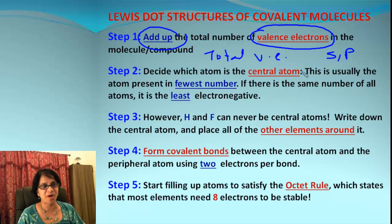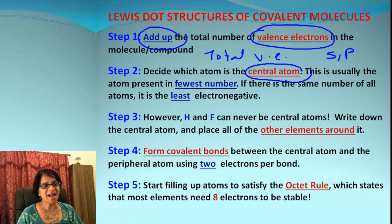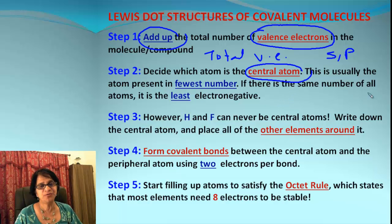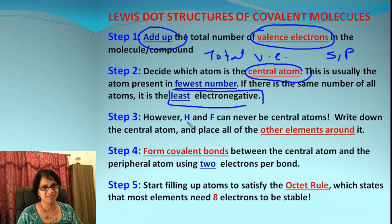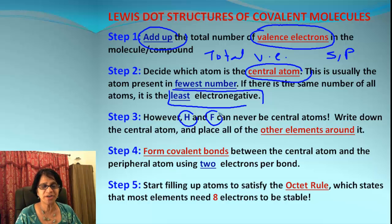The next thing is we have to find out which atom is the central atom — who is going to be the boss. The atom present in the fewest number will be the central atom. If we end up having the same number of atoms for two elements, we use the second rule: we select the element which is least electronegative as the central atom. Remember, hydrogen and fluorine will never ever be the central atom.